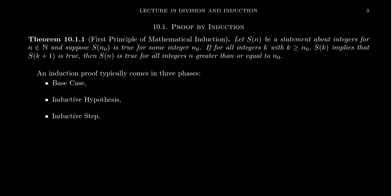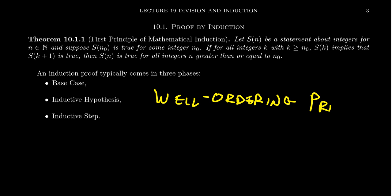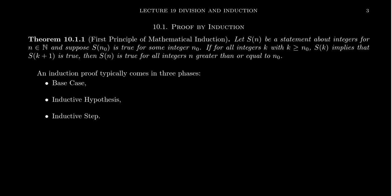Before we start, in the previous video for lecture 19, we introduced the well-ordering principle. We will actually see later on that the well-ordering principle provides a proof of mathematical induction — because every non-empty set of natural numbers has a minimal element, we get the principle of mathematical induction. We will postpone that proof until we're a little bit better at induction first.